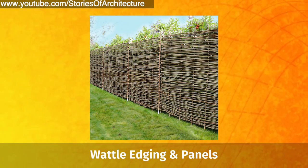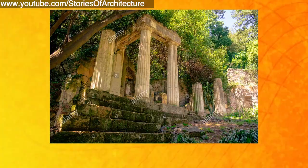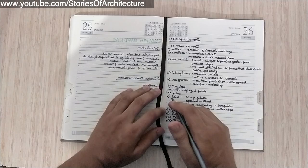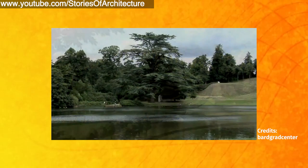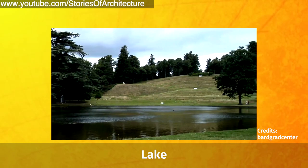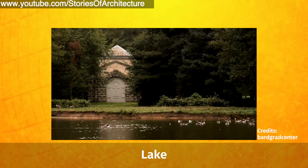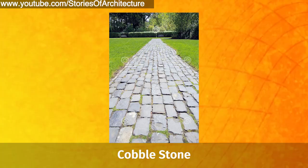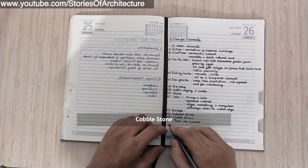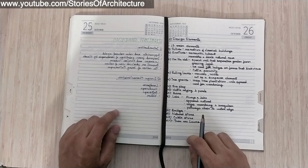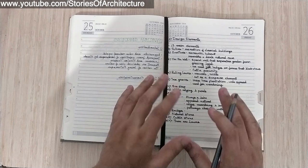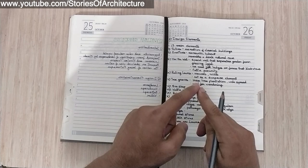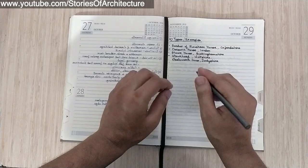The sixth element is bee scaping — essentially bee farming. The seventh is wattle edging and panels, some made from bamboo. The ninth element is ruins — structures that look like dilapidated ruins. The tenth is a lake — always present in English gardens, appearing natural even though man-made, with meandering and irregular edges and pathways close to the water's edge. The eleventh is bridges, the twelfth is natural stone, the thirteenth is cobblestone. A bonus: there are lawns in English gardens, distinguishing them from Chinese gardens.